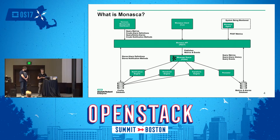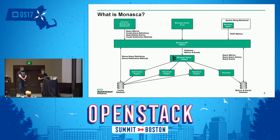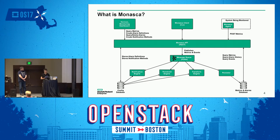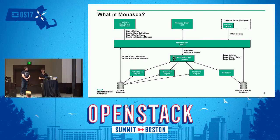This data is a big amount, so it is not stored in the configuration database. The configuration database is the OpenStack-provided database — MySQL or Postgres. Then there is the threshold engine, which processes metrics and measurements and determines alarm states. The notification engine is where, if an alarm changes state, the notification happens. The notification engine can notify the external world using different methods, with some default plugins.